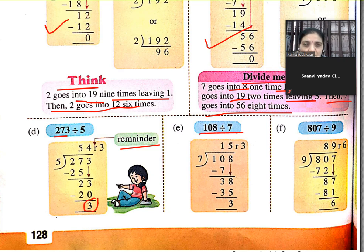108 divided by 7. 7 1s are 7, we got 3 here after subtracting. Then we bring down number 8. 7 5s are 35, and 3 is remainder.